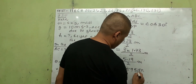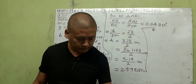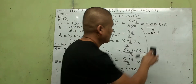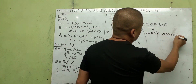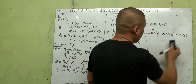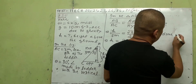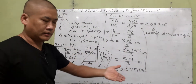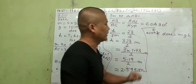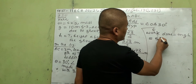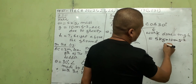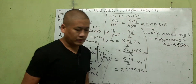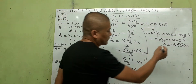Now we have all the values we need. The question asks how much work the man does. Work done by the man equals mgh, because he is carrying a concrete mass to a height — that is potential energy. The formula is mgh: m is 5 kg, g is 10 m/s², and h is 2.595 meters.